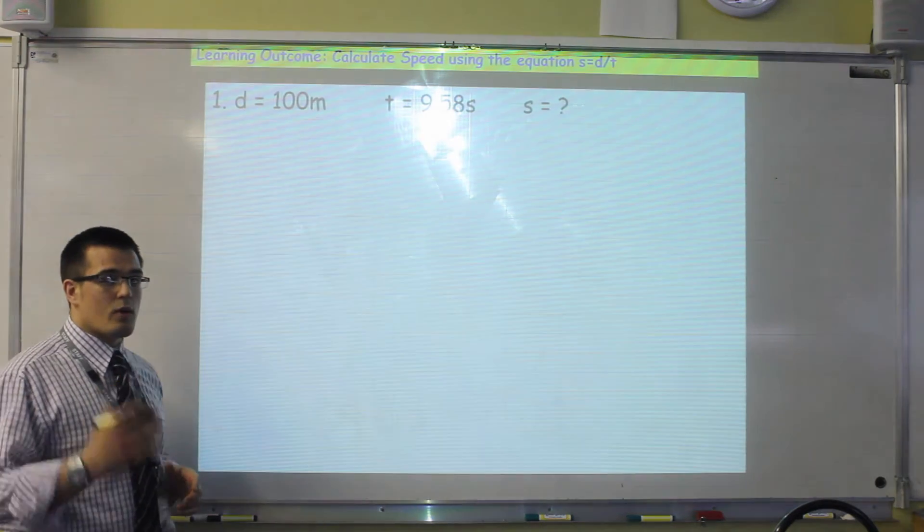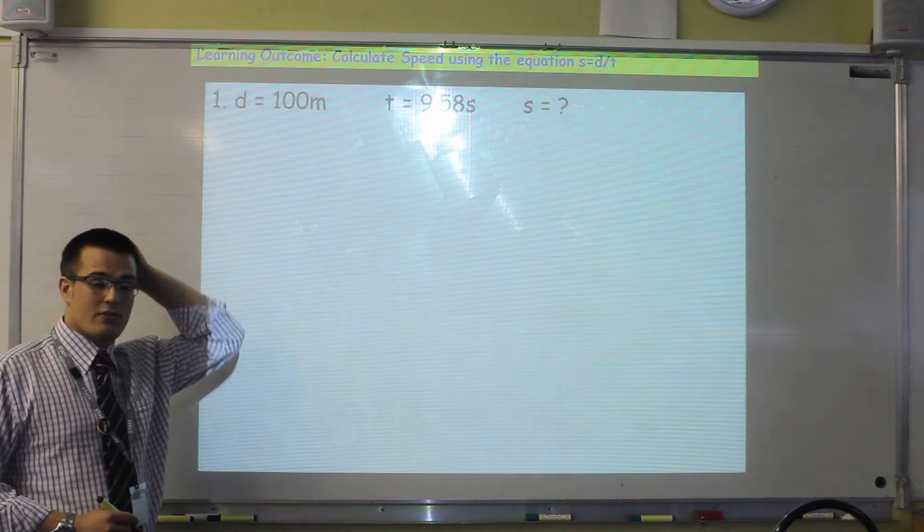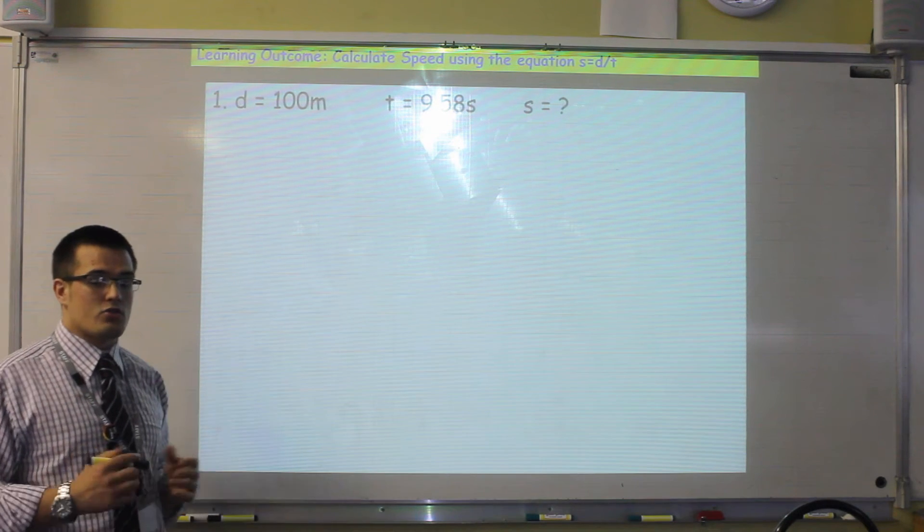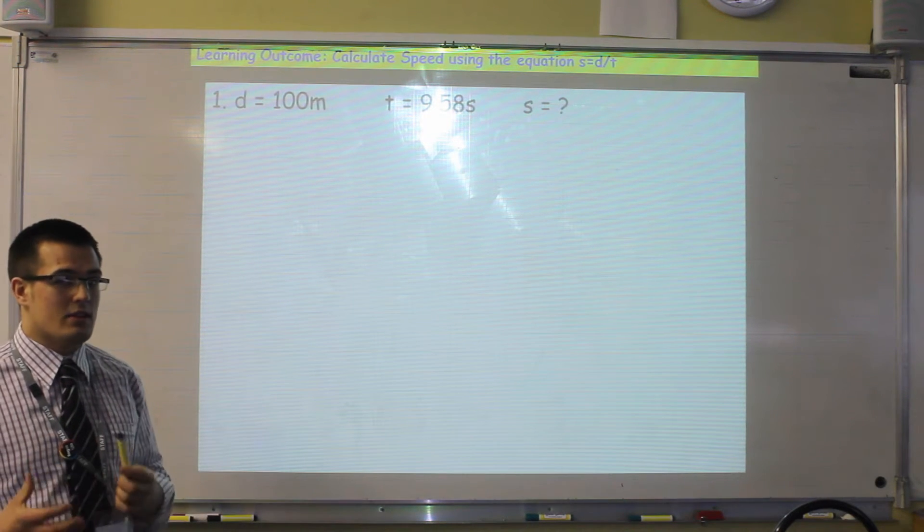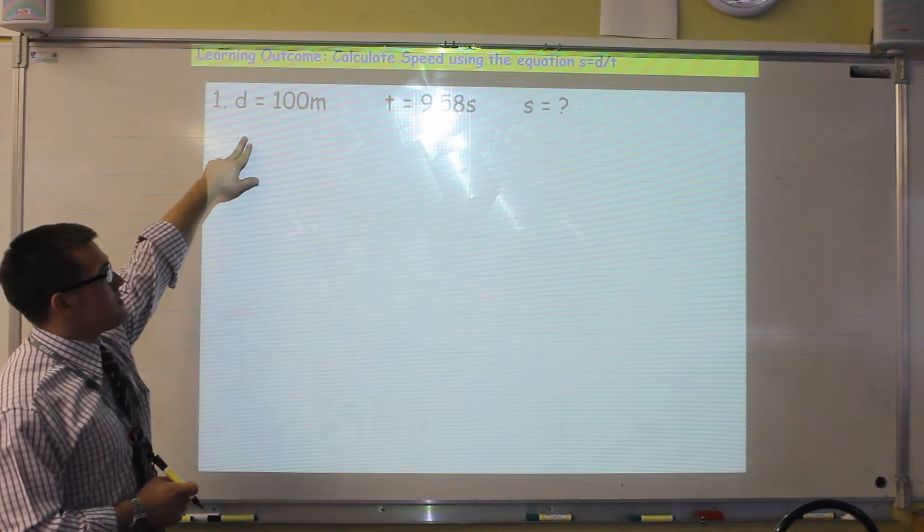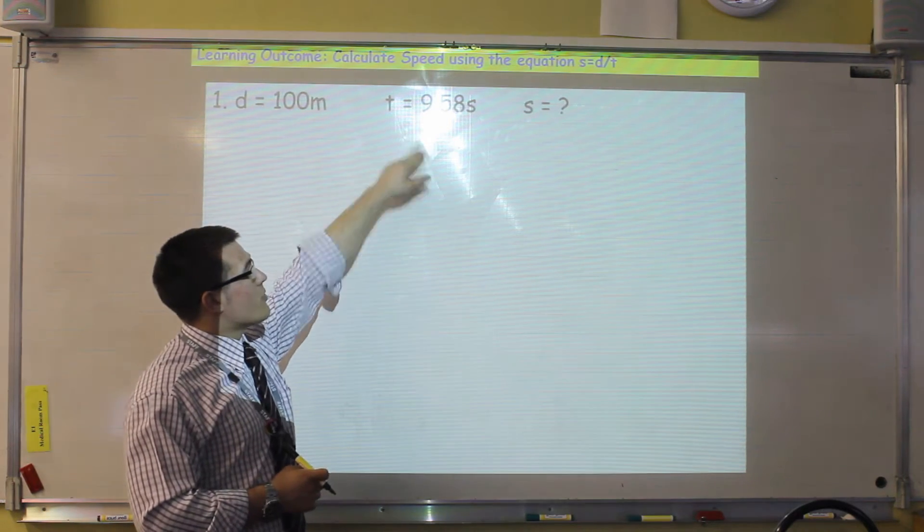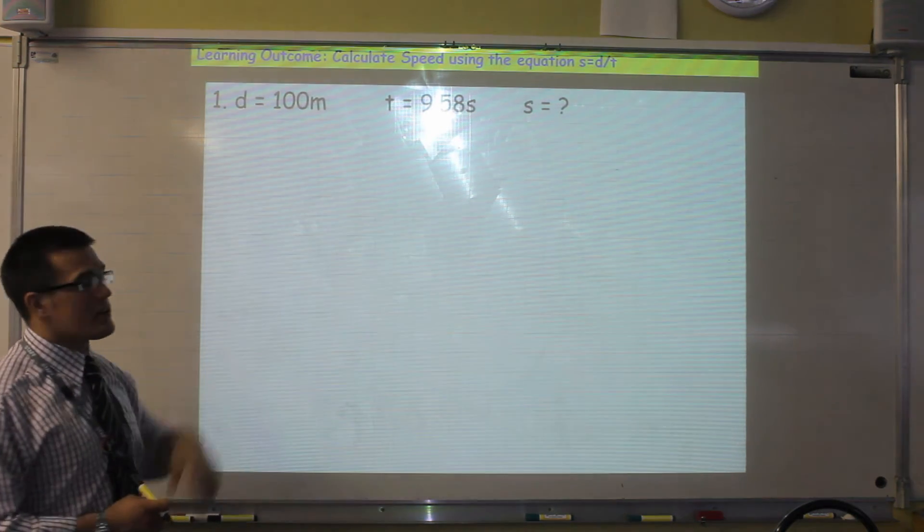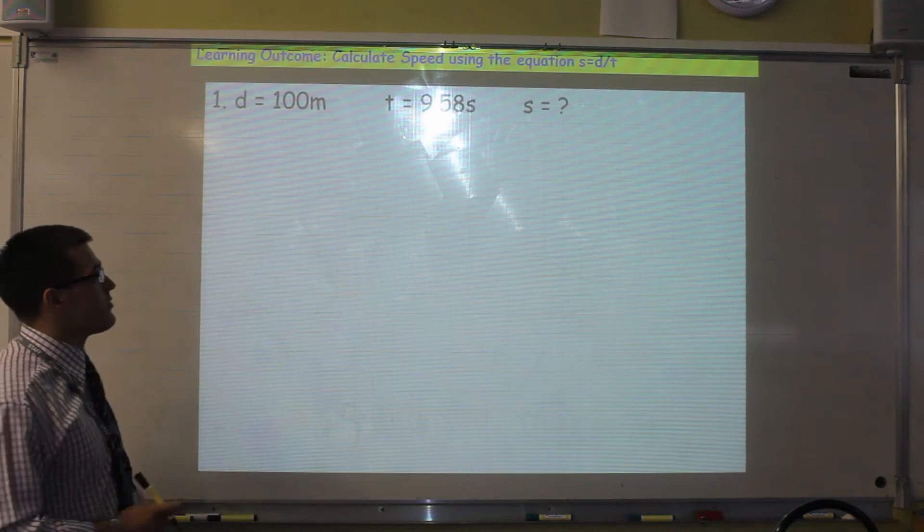So the way we do that is we follow our four steps for math questions, and if you haven't watched the video on that, I strongly recommend you do so before continuing with this module. So we know the distance is 100 meters, the time is 9.58 seconds, and we want to calculate the speed. So that is our first step done for us.